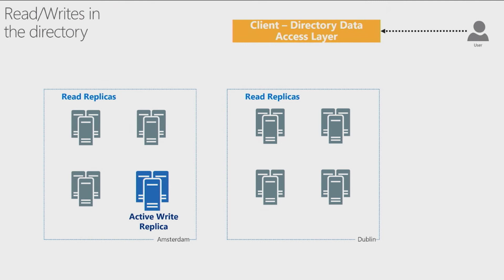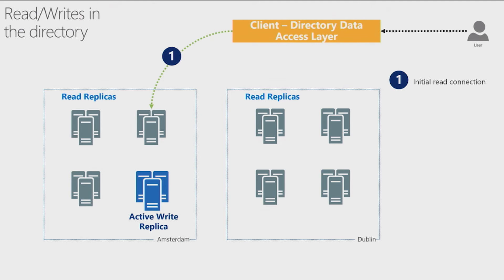Let's take a different example in which our user is coming from a country closer to the Amsterdam data center where the primary replica lives — let's say our user is in Germany. She is browsing the directory, authenticating, and looking at objects in the directory, and will be served from a read replica in the Amsterdam data center. Like the previous scenario, she will now make a write to the directory — let's say she changes her password or makes an application ownership change. That write request will, as in the previous diagram, be immediately replicated to her copy so she sees read-after-write consistency.